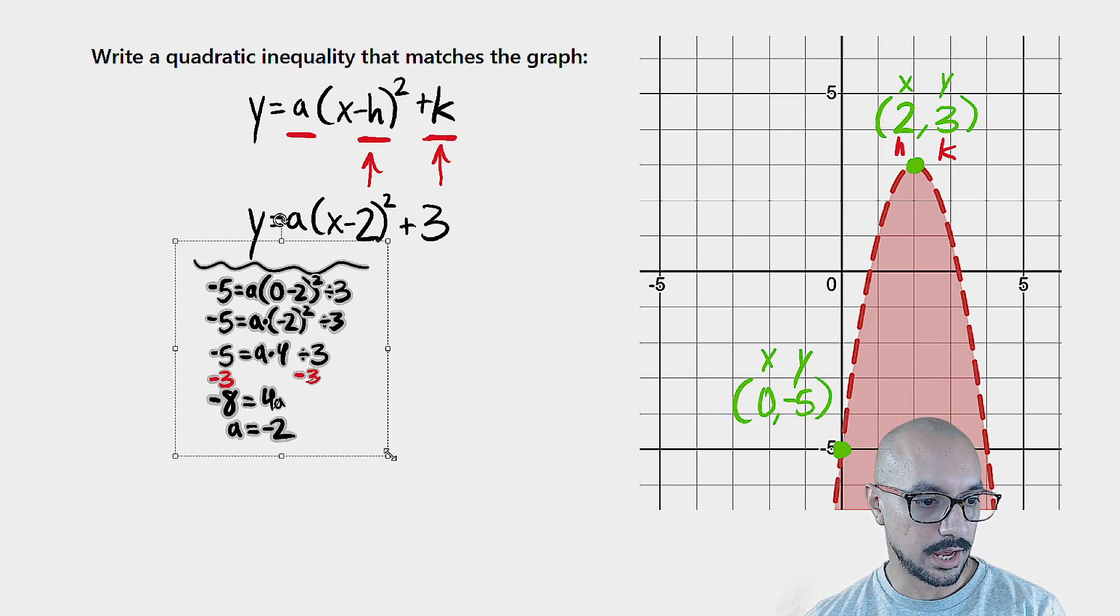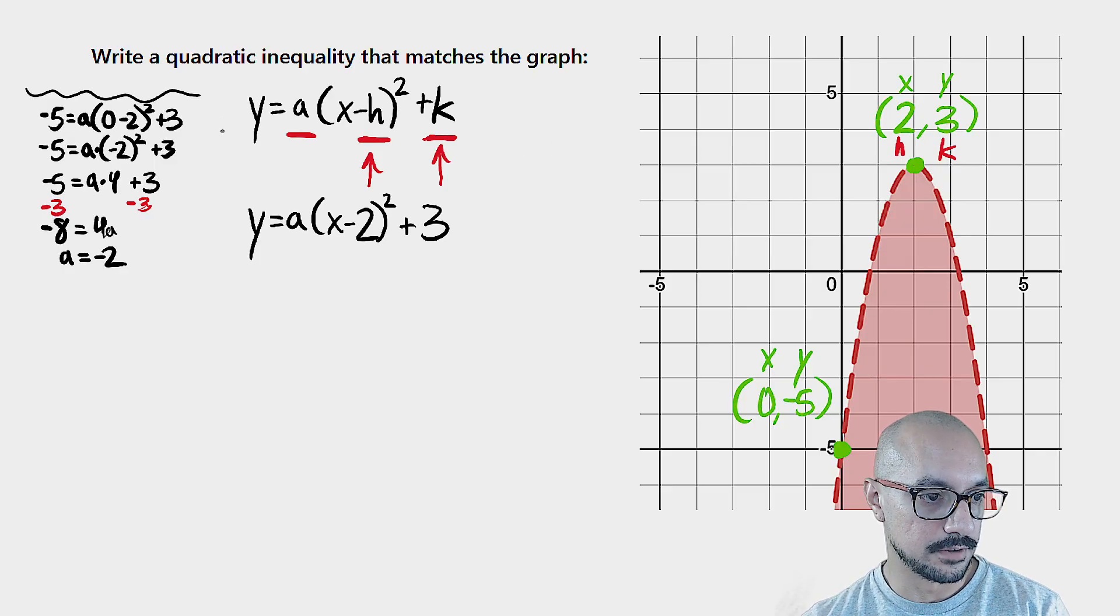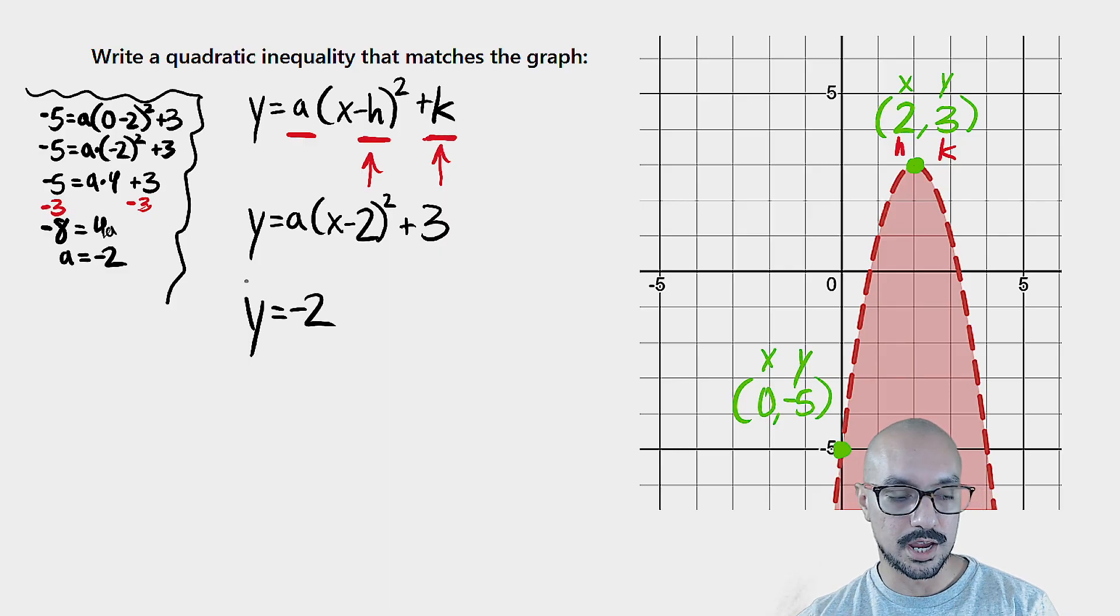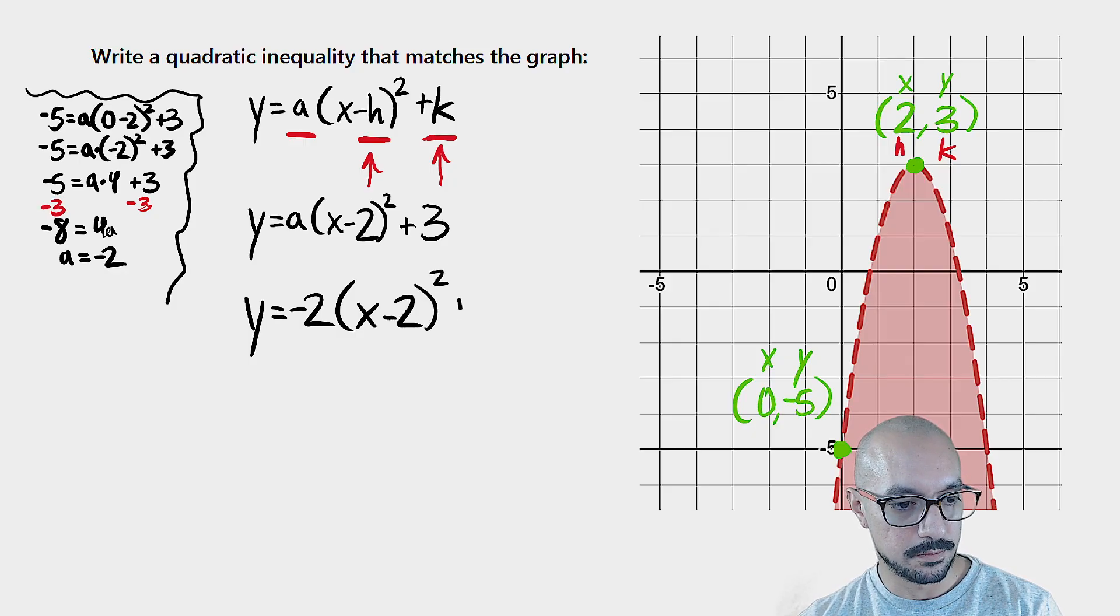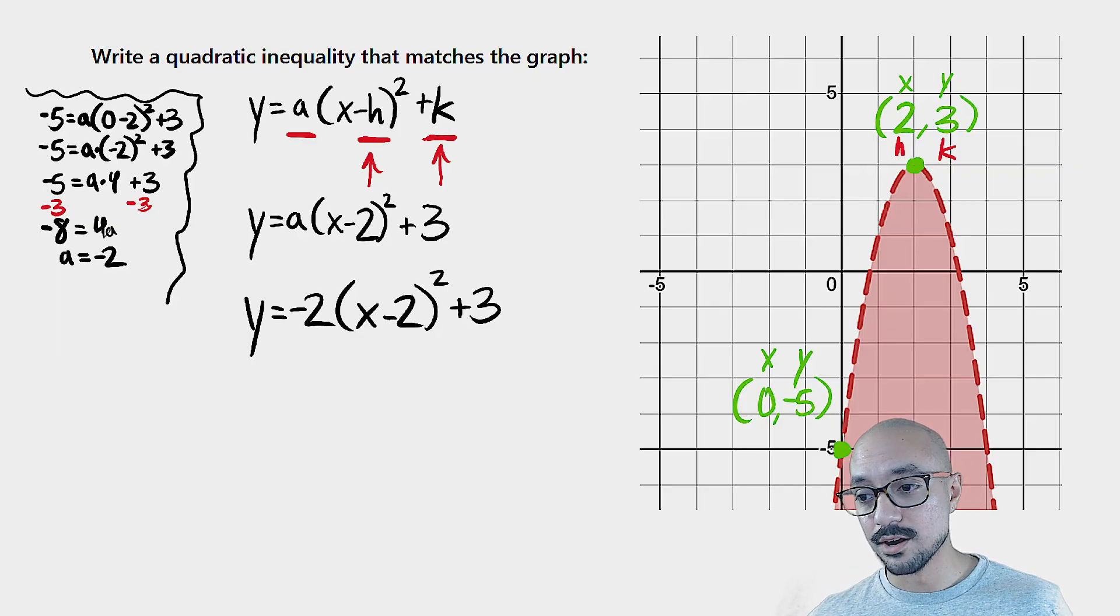So now we have our a value. That was the last parameter that we needed in order to fill in vertex form. Let me go ahead and fill that in. Y equals negative two, which is our a value that we just found, times the quantity x minus 2 squared plus 3. So now we have our boundary for the parabola.